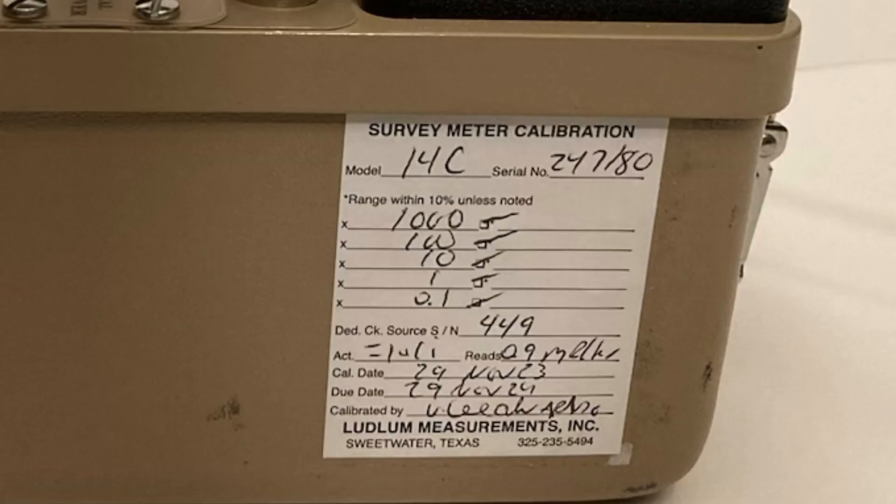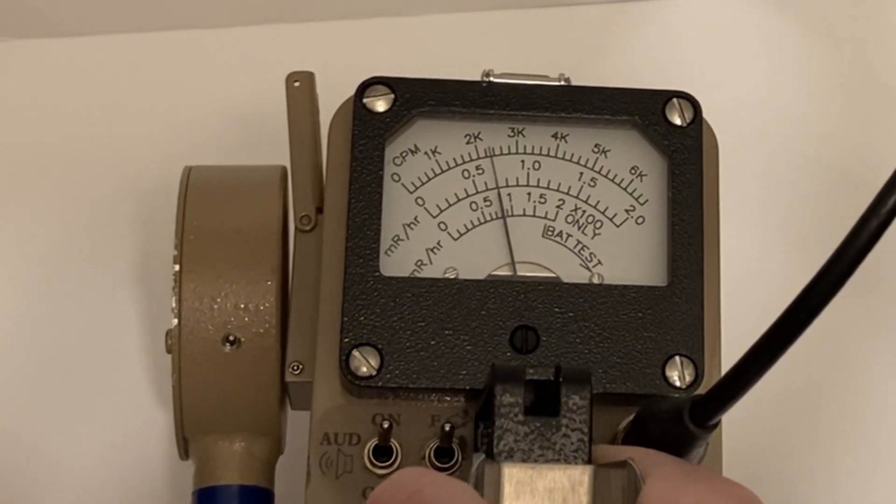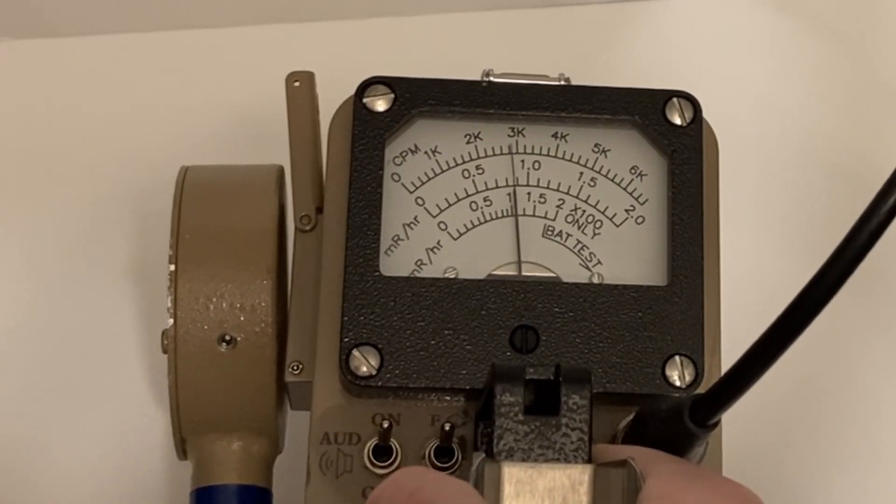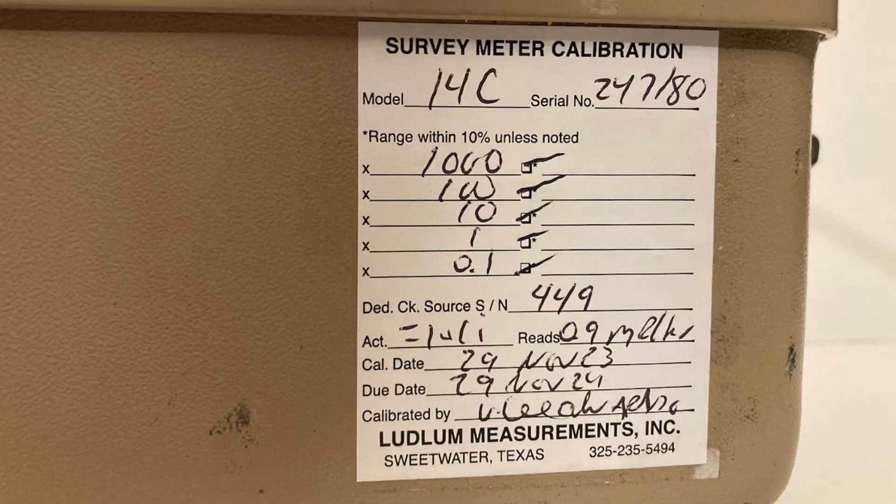Turn the instrument over and look at the calibration sticker. You will see a value, in this case 0.9 milliroentgen per hour. Inspect the reading on the dial. As long as it is within 20% of this, the instrument is good and ready for use. If not, the instrument may need calibration.